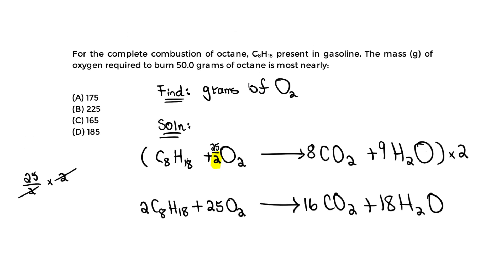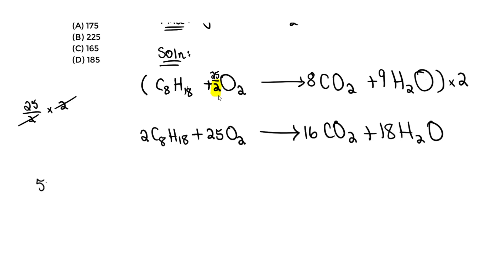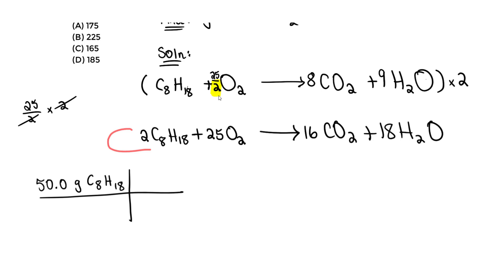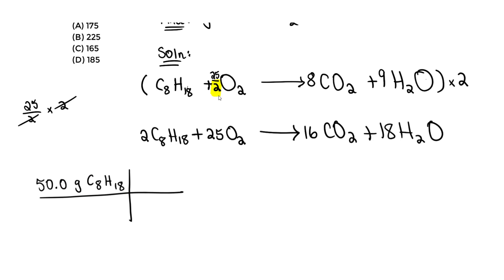That's the first step — having the balanced chemical equation. Now we actually solve the question. We start with the only value given: 50.0 grams of octane, C8H18. We're going to do stoichiometry, and we know this combustion equation relates mole to mole — for every 2 moles of octane we need 25 moles of O2. But first we need to convert grams to moles using the molar mass.